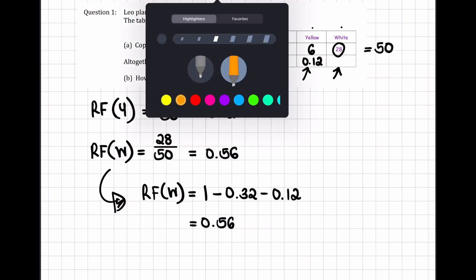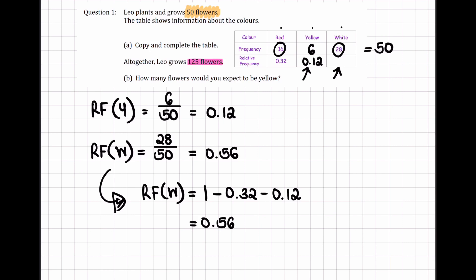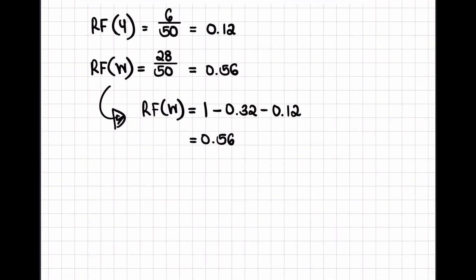Altogether, Leo grows 125 flowers. We are increasing the number from 50 to 125. How many flowers would you expect to be yellow? It's a prediction based on the relative frequency from the previous table. The relative frequency of yellow was 0.12 when there were 50 flowers, and we can assume the relative frequency will remain constant. So 0.12 of the 125 flowers will also be yellow, which means we have 15 yellow flowers.